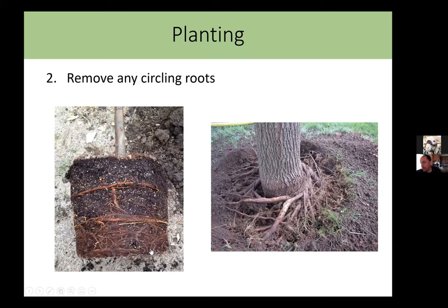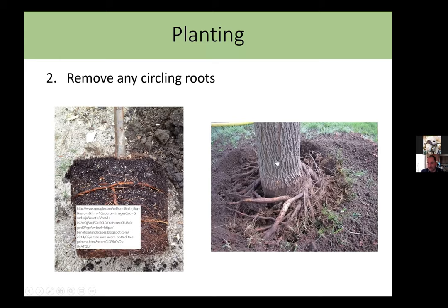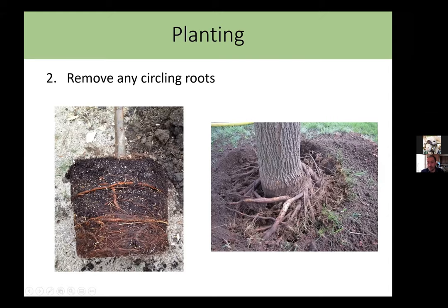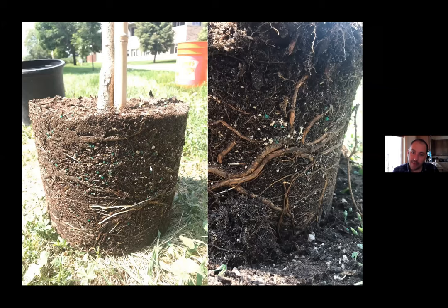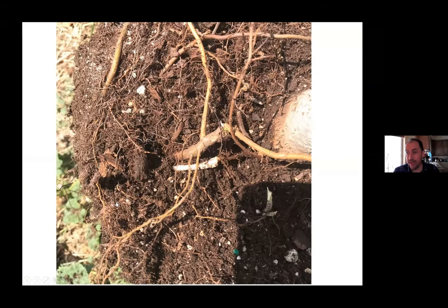Once you have your perfect hole dug, the next step — which people find traumatic — is to remove any circling roots in the root ball at planting. Here's a tree showing big roots that circled when they hit the edge of the container, went up, air-pruned at the surface, and started growing across. This is another thing that can lead to a tree girdling itself 10 to 20 years down the line. Here's a case study showing all those circling roots — they go straight up through the root ball and will be there for the life of the tree.